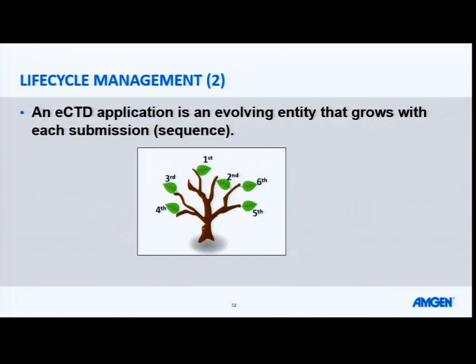An eCTD submission is an evolving entity that grows with each sequence that you submit. So over time, effectively your tree dossier is fully populated with all the information you've provided. This allows, using certain tools and using lifecycling, to very easily review everything that you've ever submitted to the agency. It also allows you to very quickly reference previously submitted information. This is one of the big benefits of eCTD — it allows both the agency and the company to have a clear picture of what their currently submitted and approved dossier is at any one point in time.